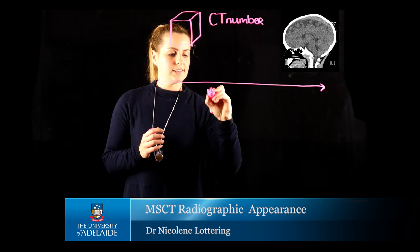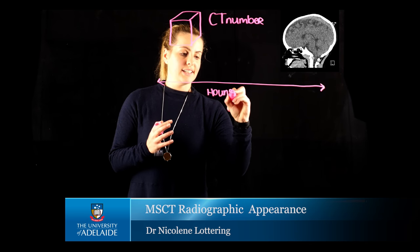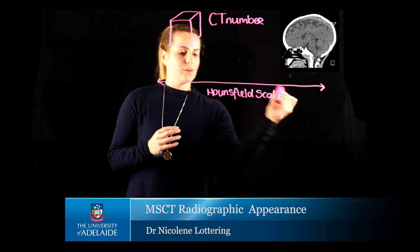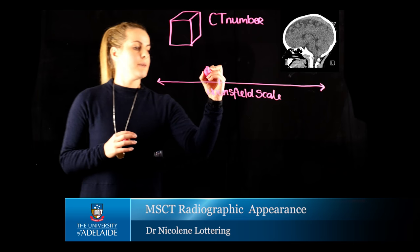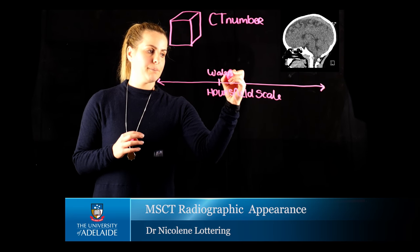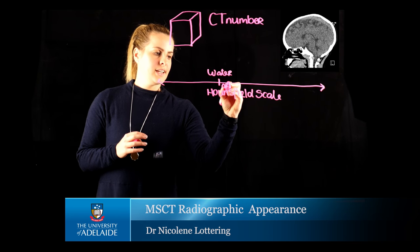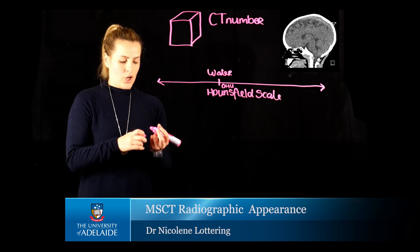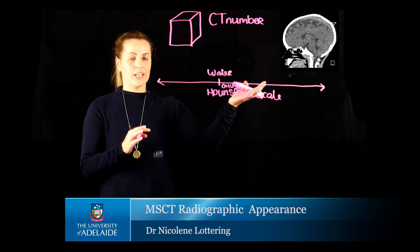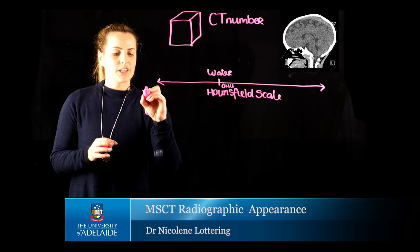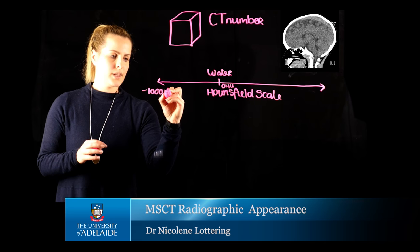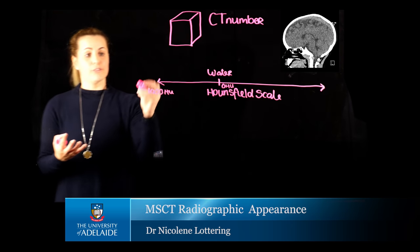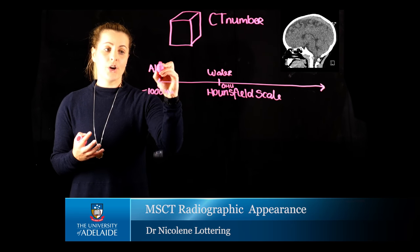The Hounsfield scale is essentially a map of density values that correspond to the value of water. Water is assigned a value of 0 — so we have an HU value of 0, where HU is the abbreviation we use to represent the CT number. The Hounsfield scale starts at approximately minus 1000 HU, which represents our low-density structures — structures such as air, which appear as black on our image.